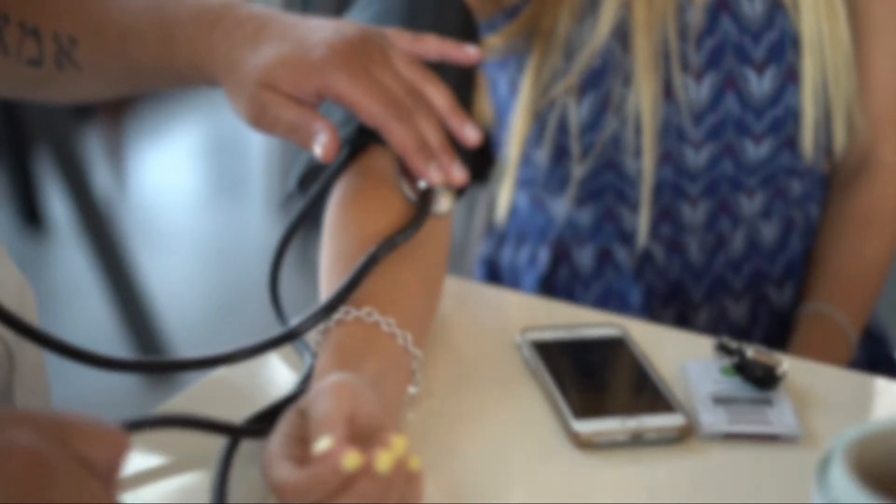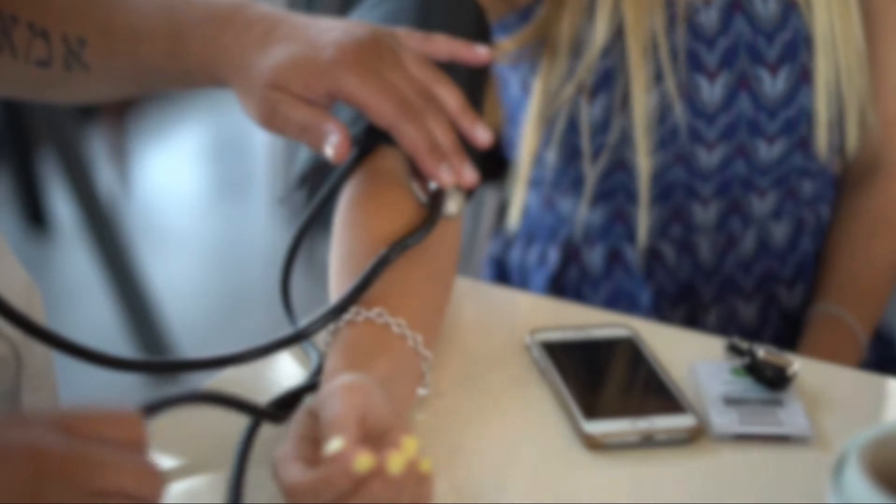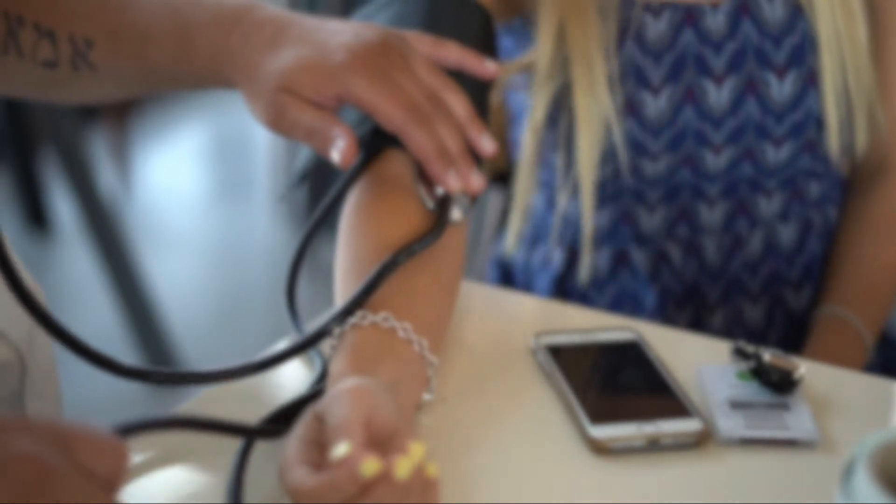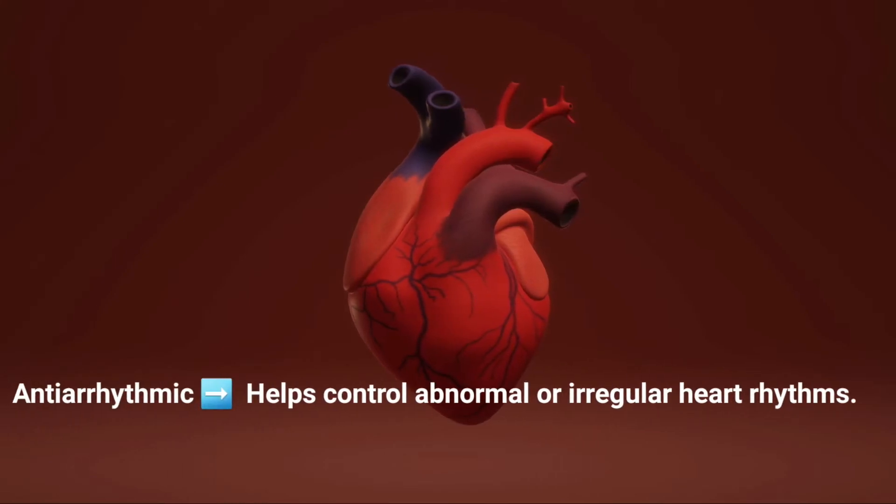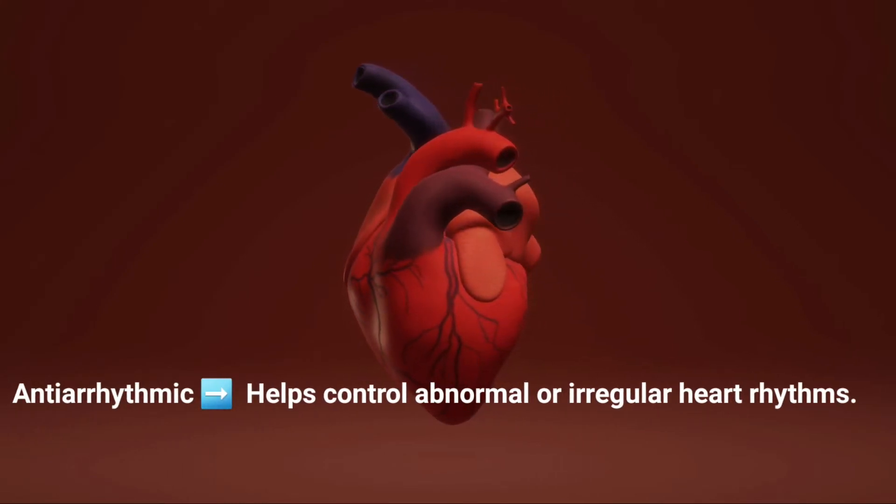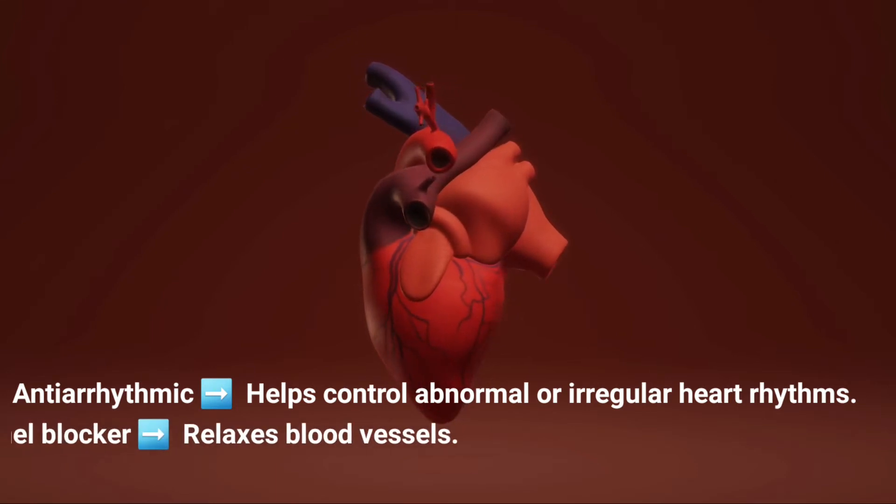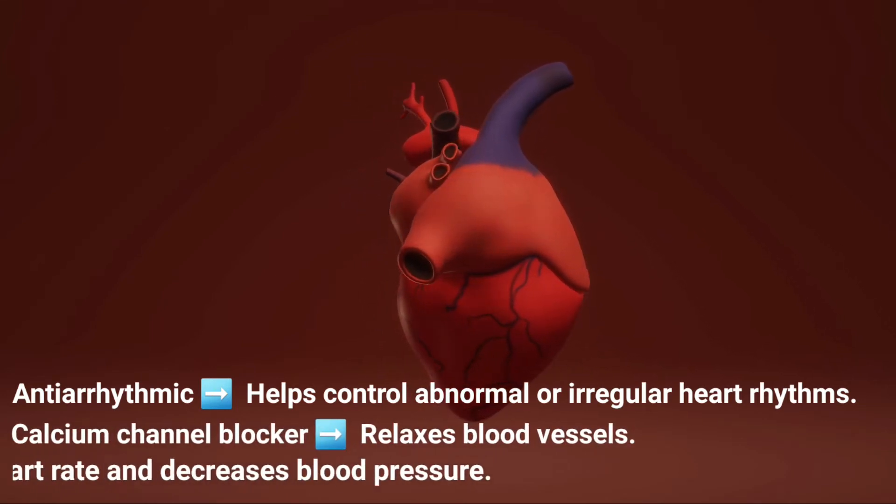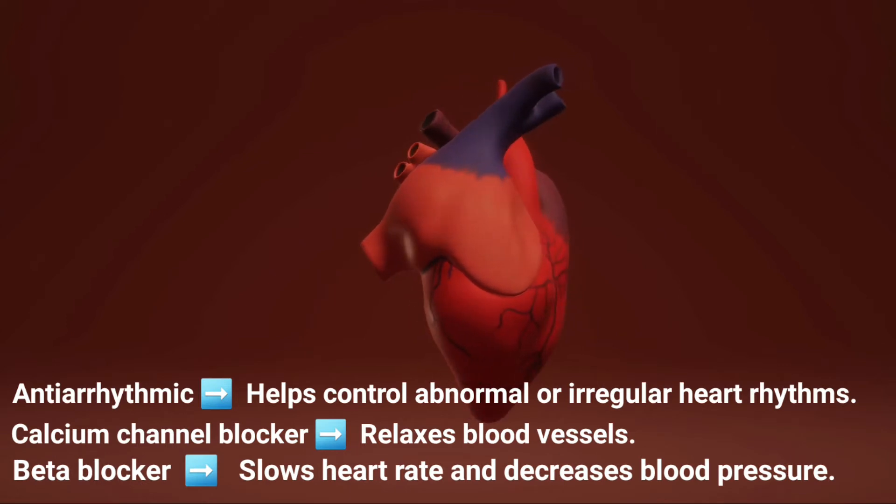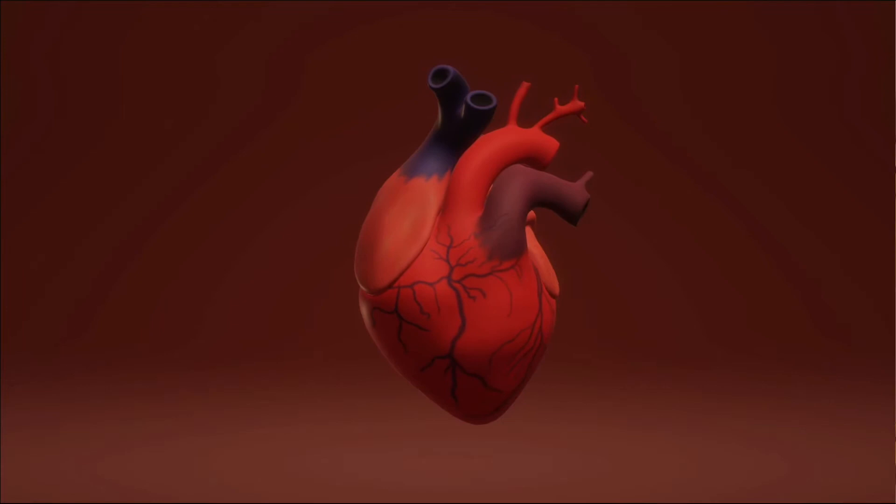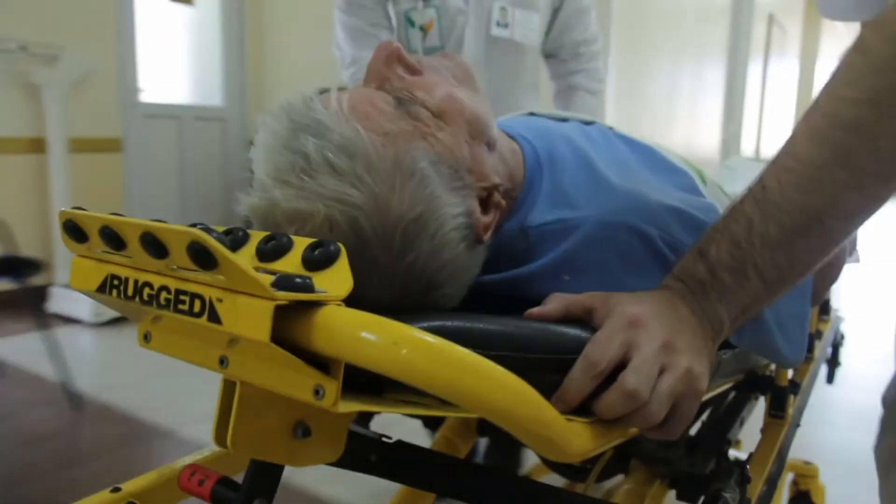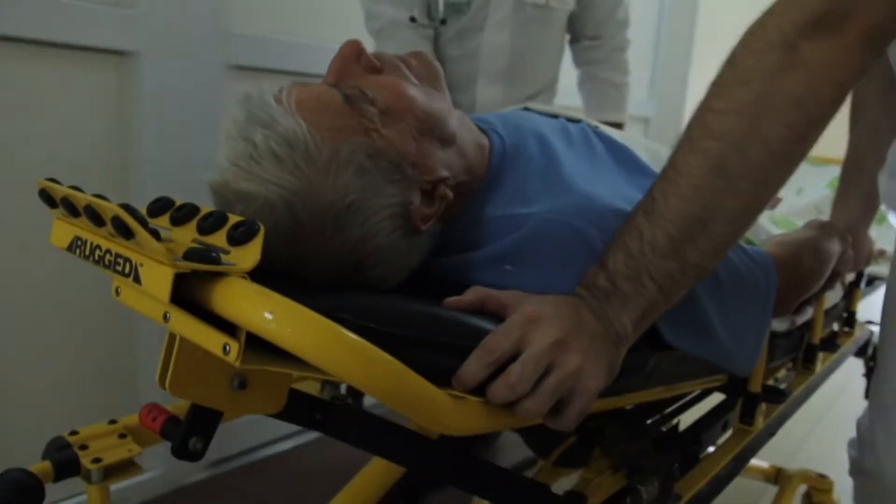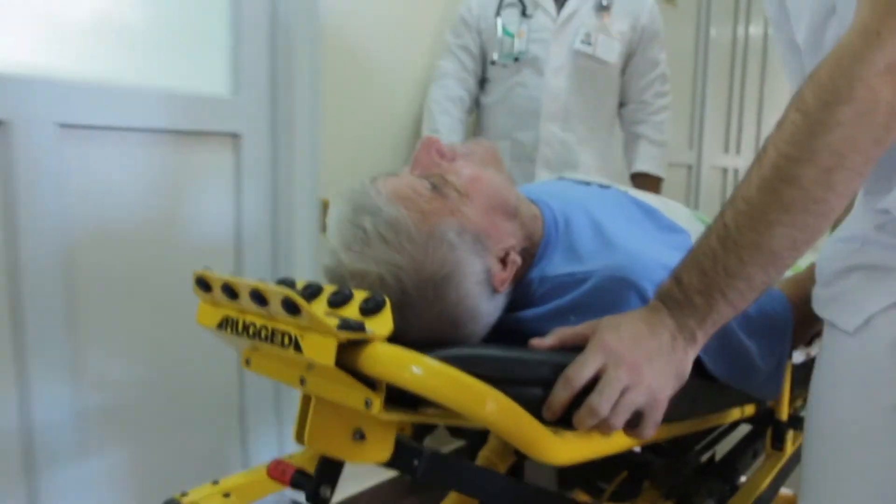While in most cases, medical treatment is required that varies from person to person, which basically includes medications such as antiarrhythmics, which help control abnormal or irregular heart rhythm, calcium channel blockers, which relax blood vessels, and beta blockers, which slow down heart rate and decrease blood pressure. But before using them, please consult your doctor. While in severe cases, implantable devices such as pacemakers are implanted through surgery.